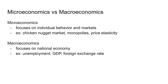Microeconomics versus macroeconomics. Microeconomics focuses on individual markets and behaviors — for example, the chicken nugget market, monopolies, and price elasticity are all things that microeconomists look at. Macroeconomics focuses on the national level — we talk about things like unemployment, inflation, GDP, and foreign exchange rates.